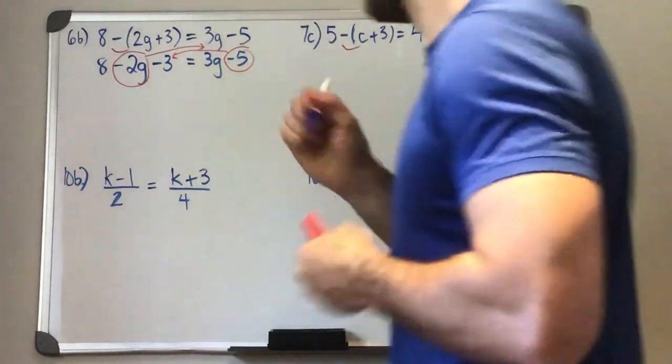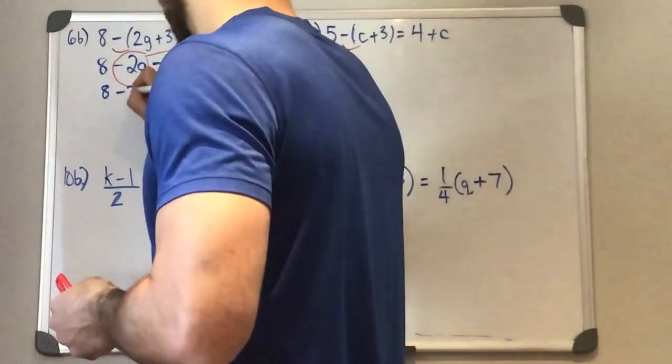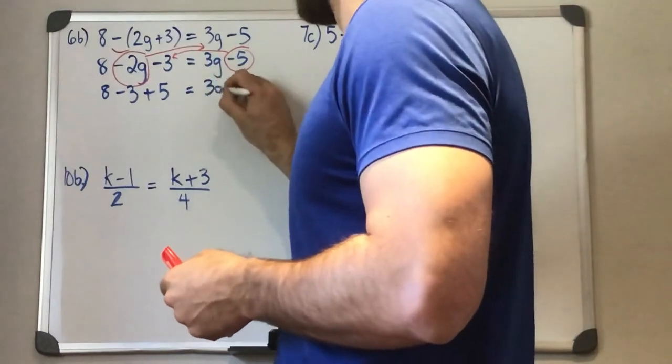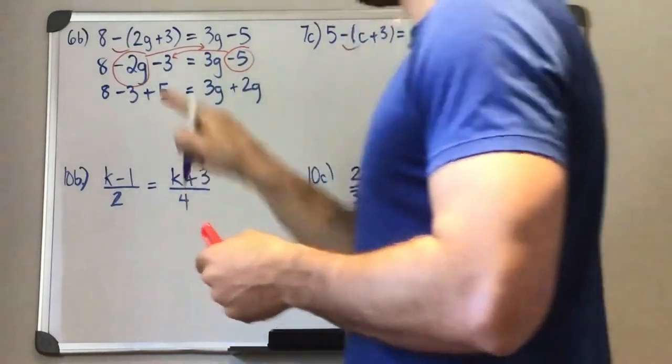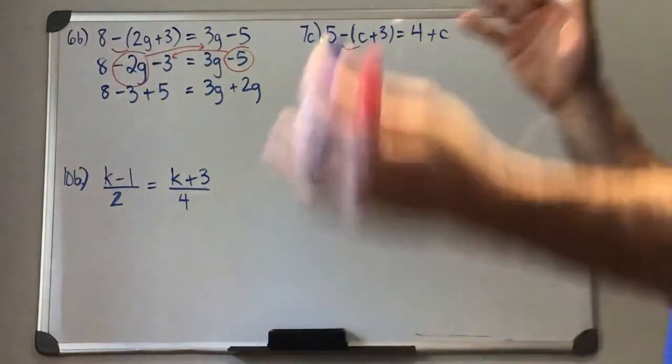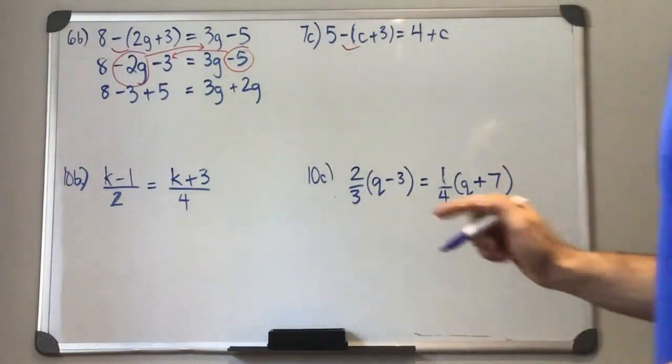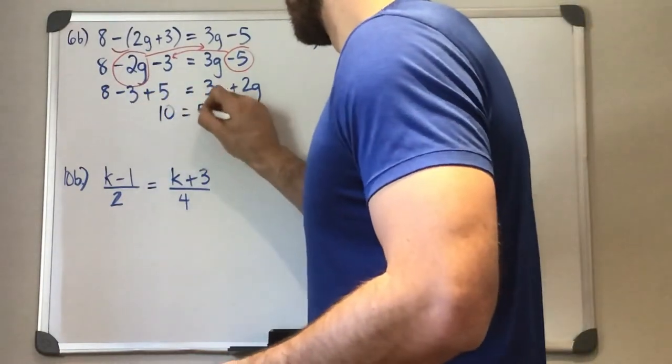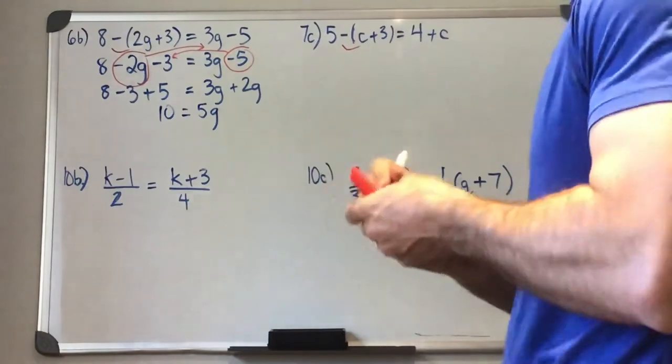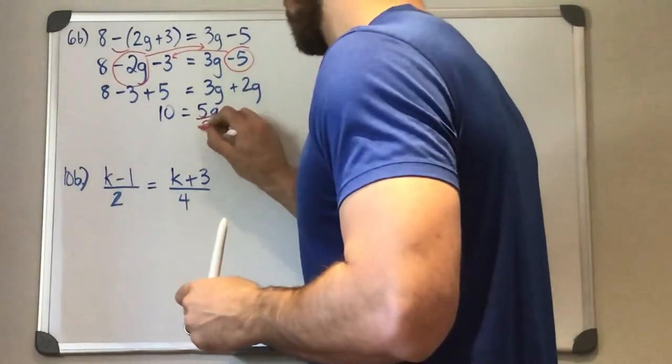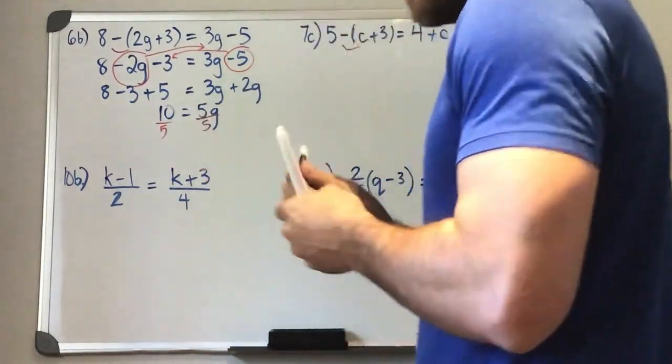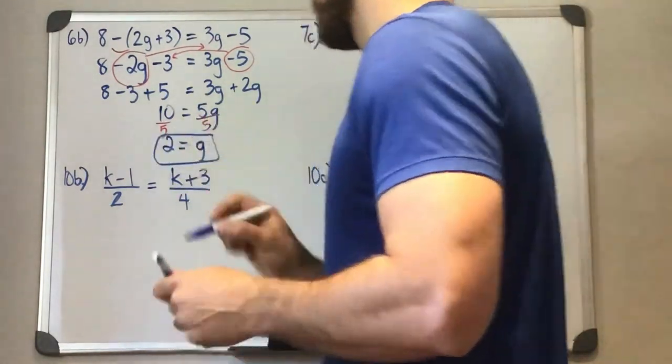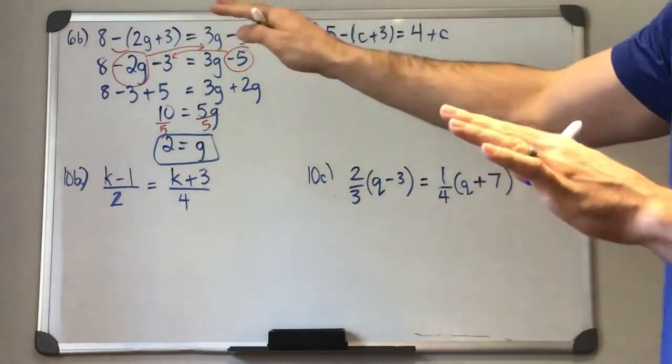All right, so if we do that, we'll have 8 minus 3 plus 5, so the sign changes. 3G plus 2G. So that sign changed as well, but it moves across the equal sign. 8 minus 3 is 5. 5 plus 5, we're left with 10 is 5G. And divide both sides by 5 to get G equals 2. So that's our first method.